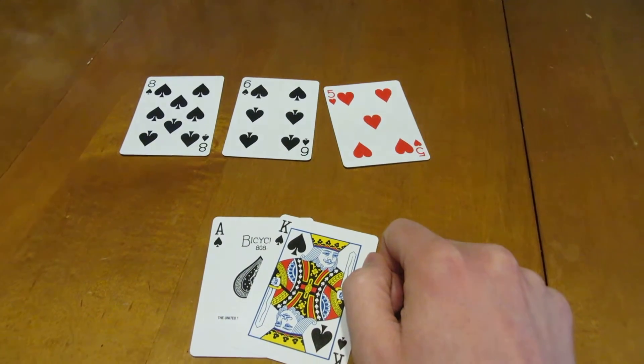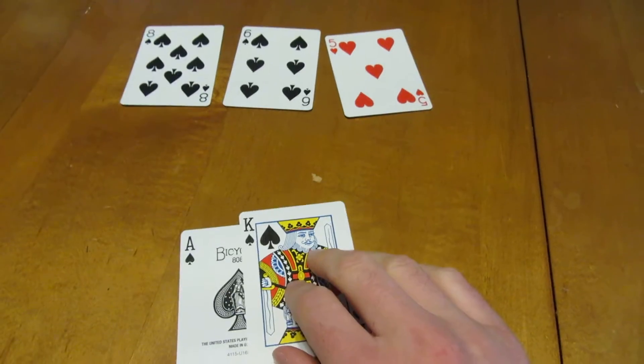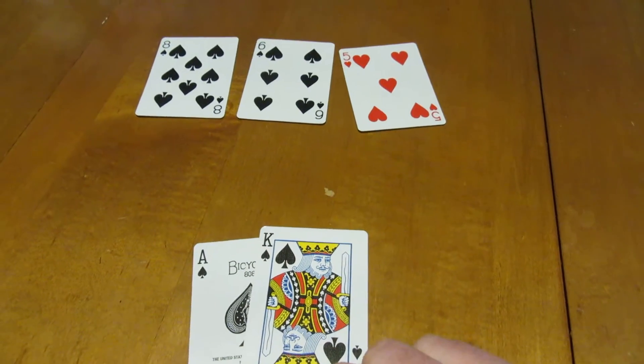So let's say you're playing Texas Hold'em, and you're looking at this. So your cards are, you've got a big slick here, Ace, King, Spades.